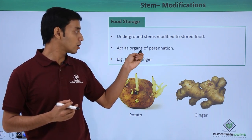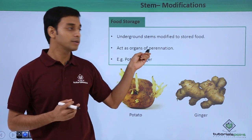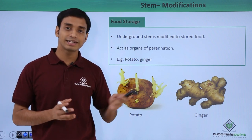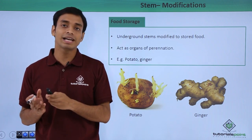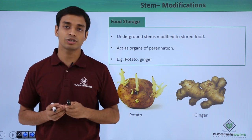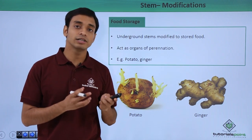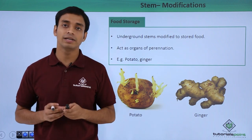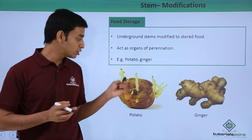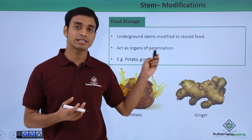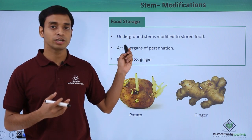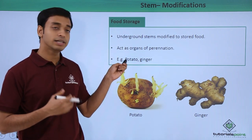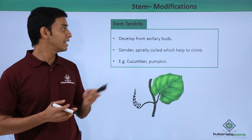These act as organs of perennation, because the stored food can be utilized during unfavorable conditions when raw materials are not available in the environment. The stored food is used by these plants to survive. Examples are potato and ginger.